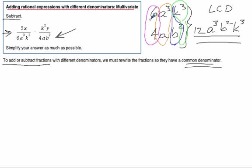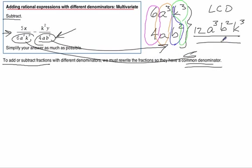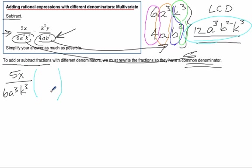That means we have to change each of these denominators into that one. Just like we do with other fractions, we're going to multiply by 1 to make that happen. So if we have 5x over 6a cubed k cubed, what do we have to multiply by to give it the 12a cubed b squared k cubed denominator? To make the 6 into 12, we multiply by 2. The a cubed is already there. We need a b squared, and the k cubed is already there. So we multiply by 2b squared.